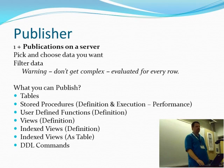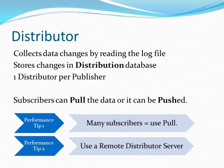It also can move over table definition changes as well. Your distributor collects the data changes by reading the log file from your databases that you're publishing, and it stores the changes in the distribution database. You've got one distributor per publisher. The best practice is to have a remote distributor server to offload that work from your master server — that's the whole purpose of replication: get all the work you can off your master server.